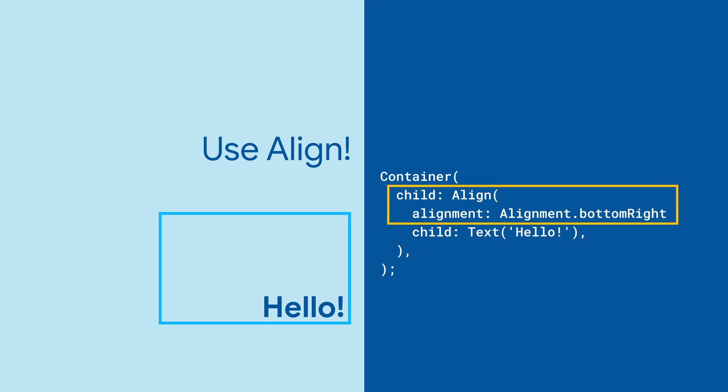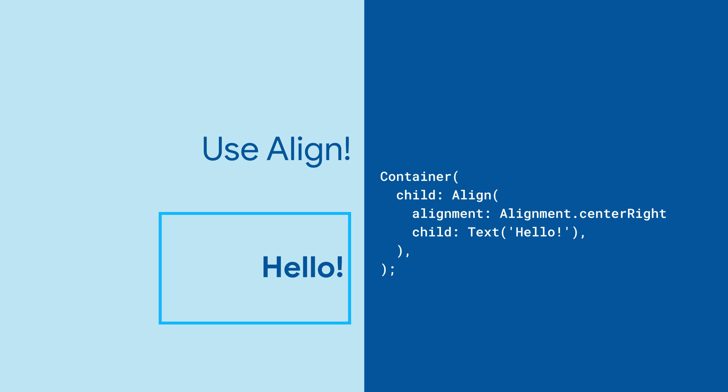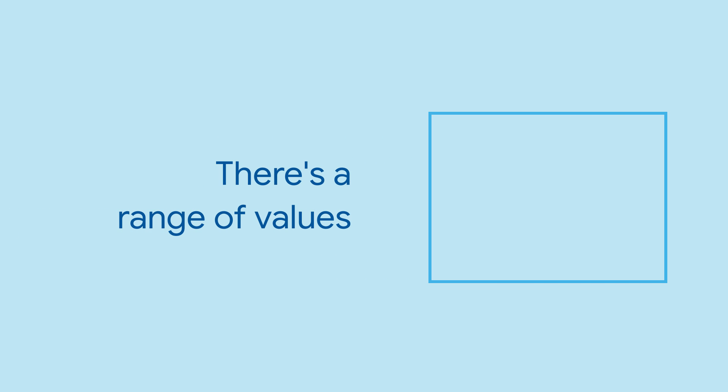Here's where the Align widget comes in handy. Align will let you place widgets in a defined area of its parent widget, such as the bottom right, or top left, or center right, wherever you fancy.